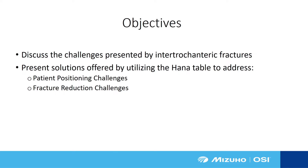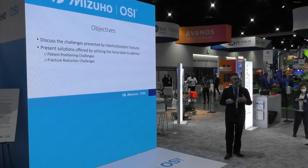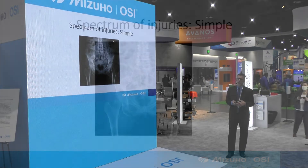Specifically for the objectives of this talk, we want to look at some of the more challenging types of hip fractures that we see in the operating room, knowing that there is an entire spectrum we are faced with on a daily basis. Then we look at where we are with the HANA table as far as offering solutions — not only for difficult patients from a body habitus or a difficult fracture pattern standpoint, but also just difficult reductions and how to obtain and maintain those reductions throughout the procedure.